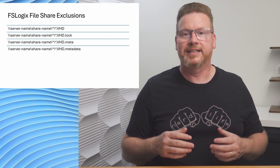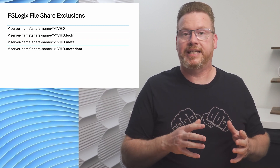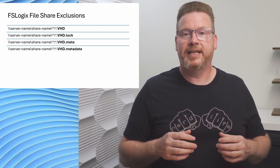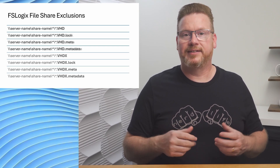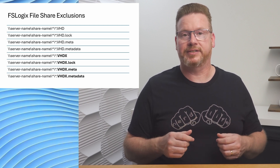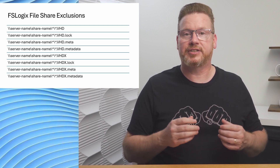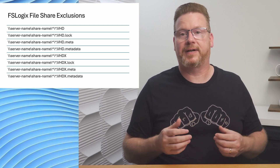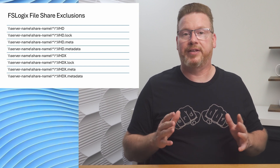Next, create exclusions for each file share used to store profile containers. This is a UNC path with a server name and share name. There are four entries: one for the VHD, one for the lock file used when the profile is in use, one for the meta extension, and one for the metadata extension. These files store metadata about the profile container. There's a second set for the VHDX extensions. The exclusion requires eight entries for each FSLogix file share — four for VHD and four for VHDX. So if your organization has four different FSLogix profile shares, that would be 32 entries.